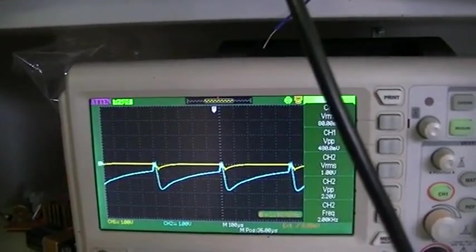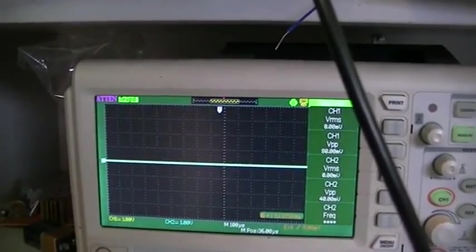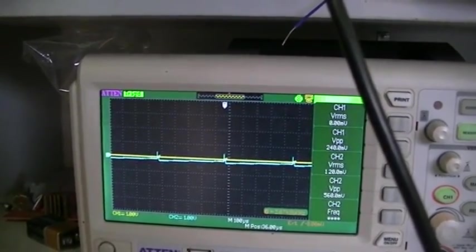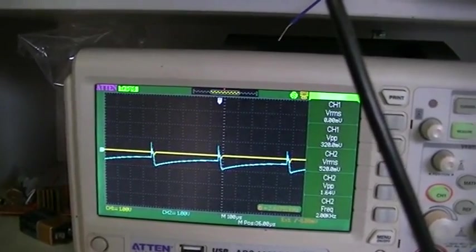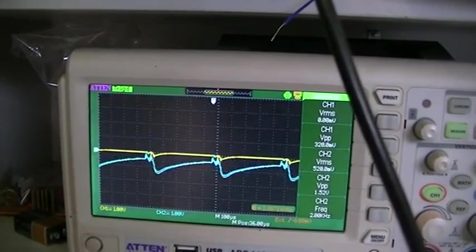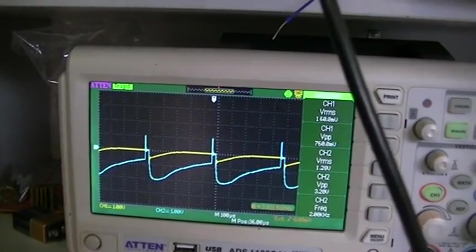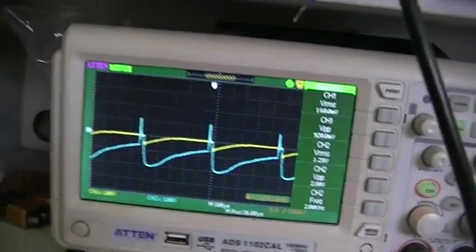And I'm going to take it right down to 1% and we have nothing. So that is a 4% duty cycle, that is 5, and that is 6. So there you go.